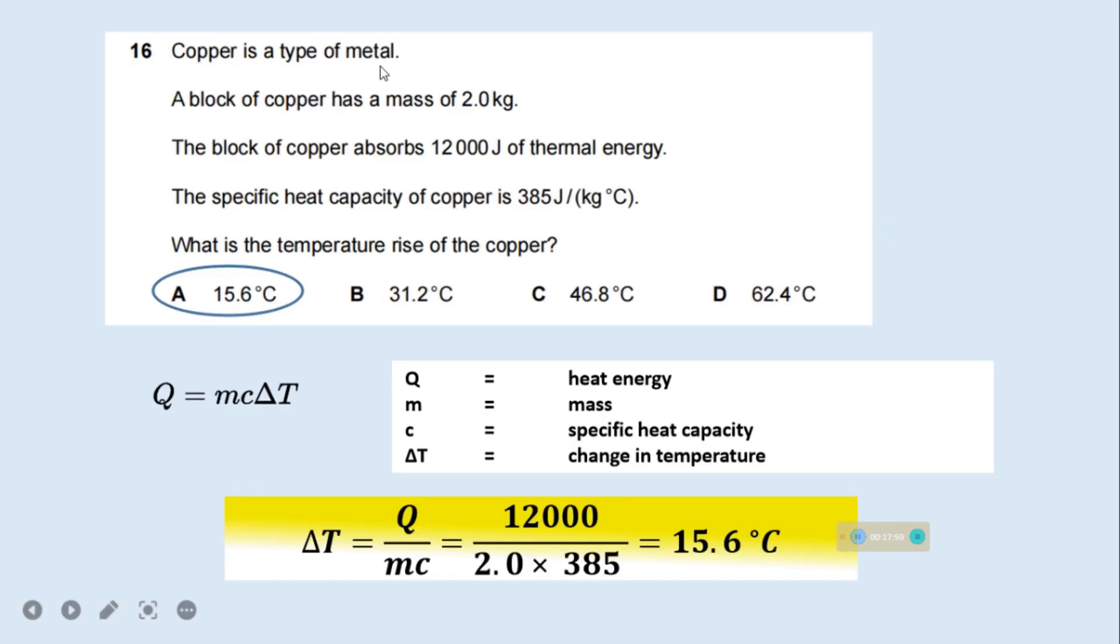Copper is a type of metal. A block of copper has a mass of 2 kg. The block of copper absorbs 12,000 joule of thermal energy. The specific heat capacity of copper is 385 joule per kilogram degree centigrade. What is the temperature rise of the copper? This is the relationship: Q equals MC delta T, where Q is the heat energy, M is mass, C is specific heat capacity, and delta T is change in temperature. Q is 12,000 joule, M is 2 kilogram, and C the specific heat capacity. Put everything in the formula and calculate delta T. It is 15.6 degree centigrade.